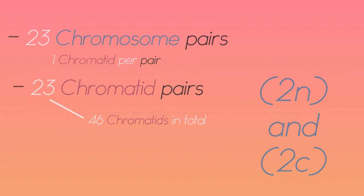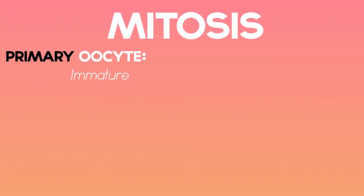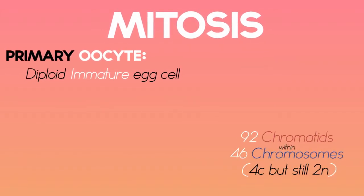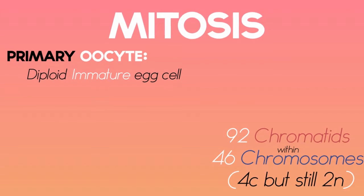Before birth, oogonium cells reproduce through mitosis. Some of them reproduce into primary oocytes, which are immature egg cells. These diploid primary oocytes, which contain 92 chromatids containing 46 chromosomes, begin meiosis.